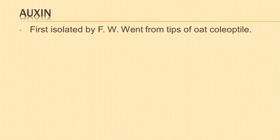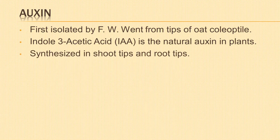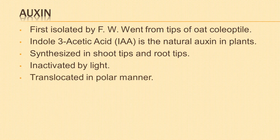Let us learn about auxin. Auxin was first isolated by F.W. Went from the tip of coleoptiles of oat seedlings. Auxins are weak organic acids produced naturally by plants, having an unsaturated ring structure, which are capable of promoting cell elongation during growth of stem and root. Indole-3-acetic acid (IAA) is the natural auxin found in all types of plants. Auxins are synthesized in shoot tips and root tips and are inactivated by light. Auxins are translocated in a polar manner — from morphological apex to the base — downward in stem and upward in roots.